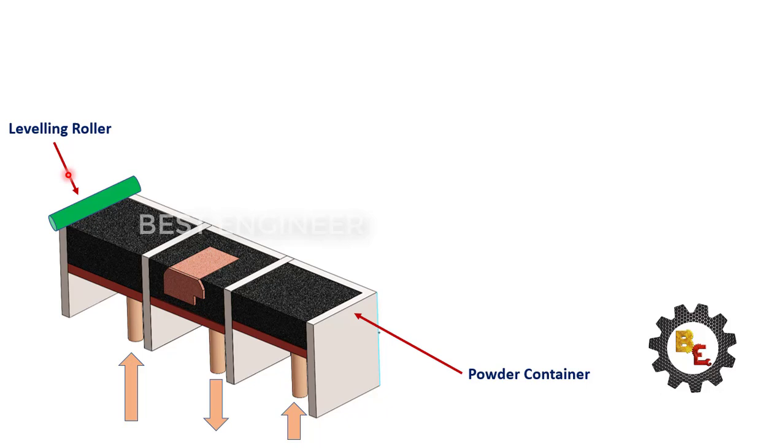Leveling roller: The purpose of leveling roller is to spread out the powder particles over the building platform. This leveling roller will move from left to right, right to left to make a uniform layer over the building platform.